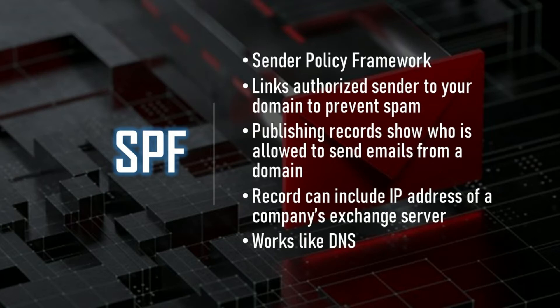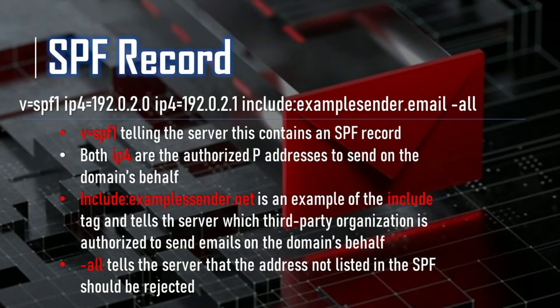There are publishing records that show who is allowed to send emails from an organization's domain, and this record may include the IP address of a company's exchange server. Here's an example of what one of the records may look like. V equals SPF1 tells the server that this contains an SPF record, and each SPF record must begin with this string. Next is the guest list portion — a list of authorized IP addresses. In this specific case, the SPF record is indicating that both listed IPv4 addresses are authorized to send emails on behalf of the domain. Include colon example sender.net is an example of the include tag, which tells the server which third-party organizations are authorized to send emails on behalf of the domain. At the end, -all tells the server that addresses not listed in the SPF record are not authorized to send emails and should be rejected.